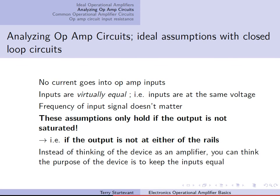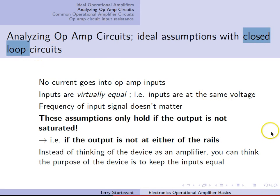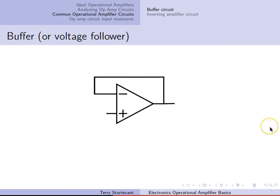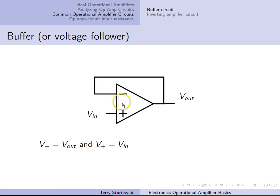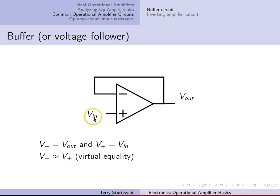Instead of thinking of the device as an amplifier, you can think of its purpose as to keep the inputs equal — which is the case with closed-loop negative feedback circuits. The most simple circuit is a buffer or voltage follower. You have an input voltage, an output voltage, and the output is tied directly into the inverting input. Since the two inputs are equal, the voltage at the non-inverting input and the inverting input are the same. Since the voltage at the inverting input is tied to the output, the output voltage equals the input voltage.